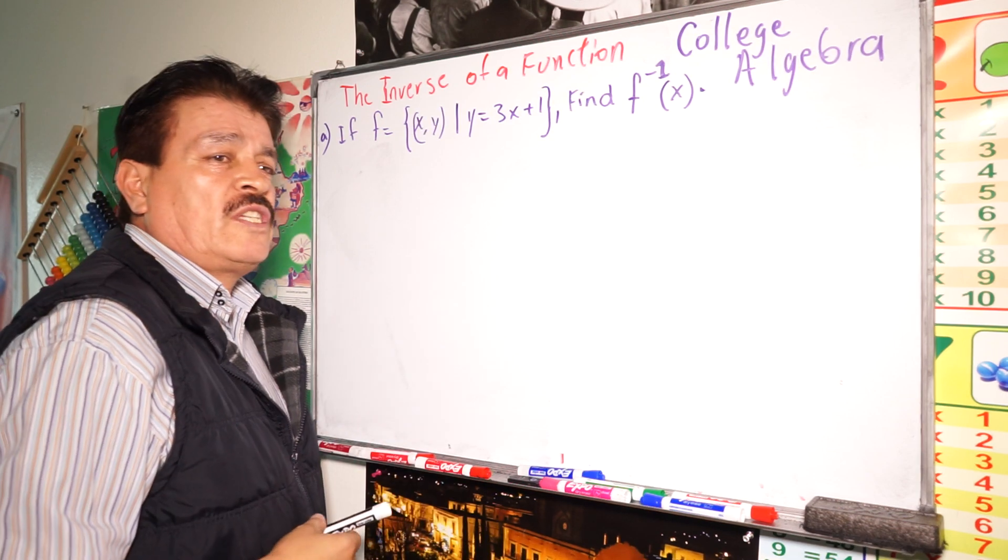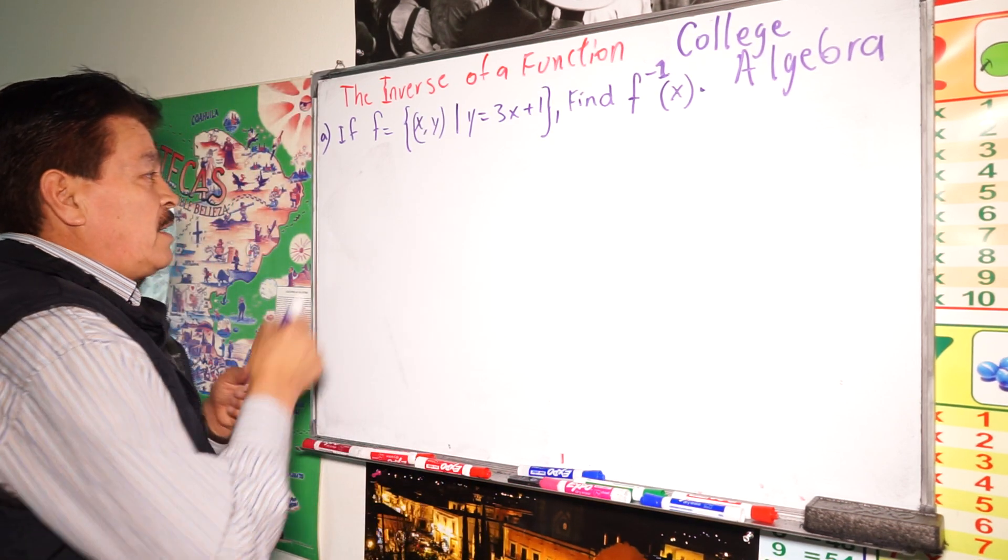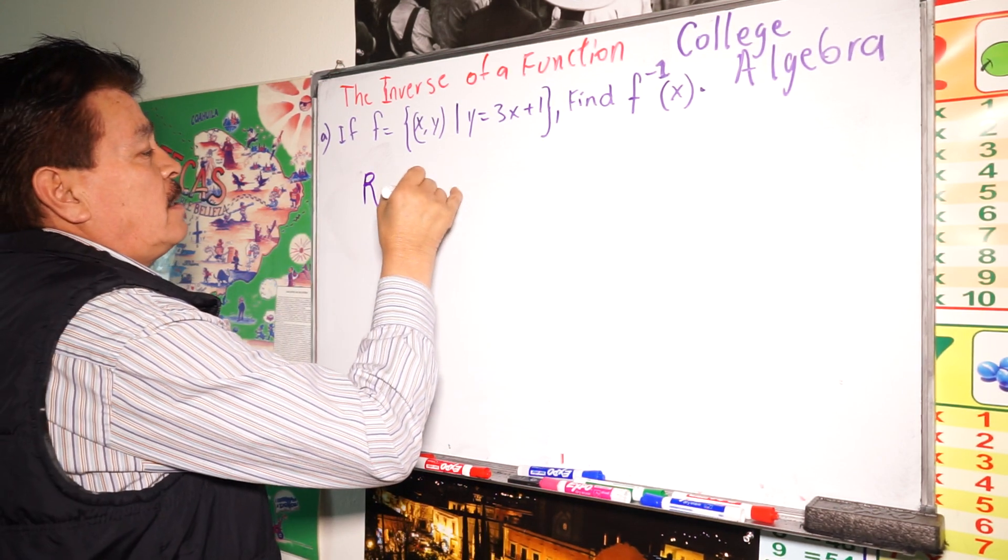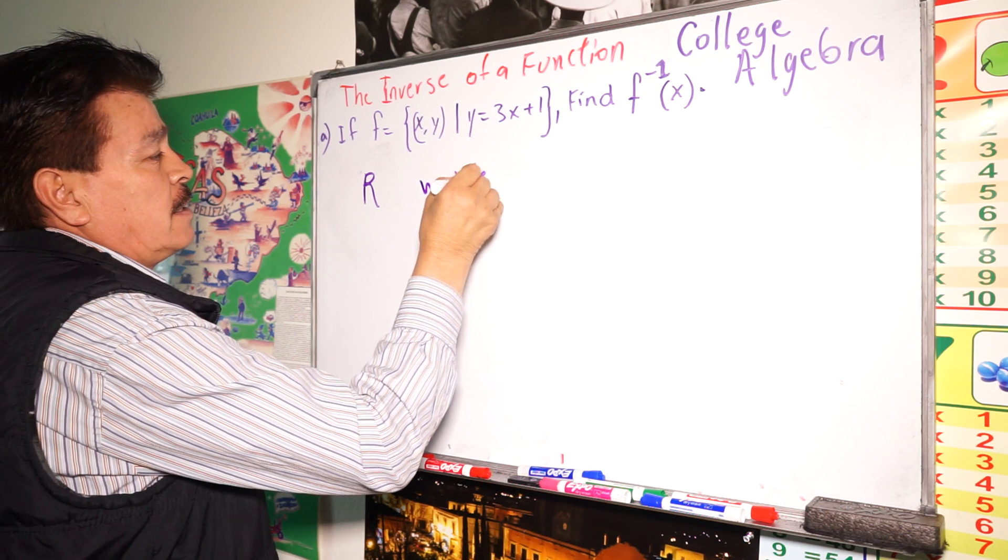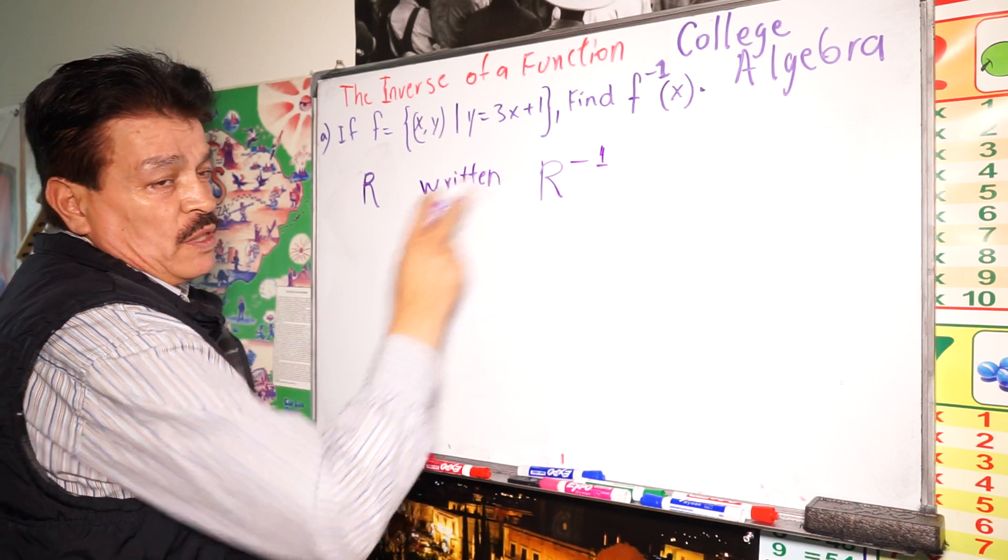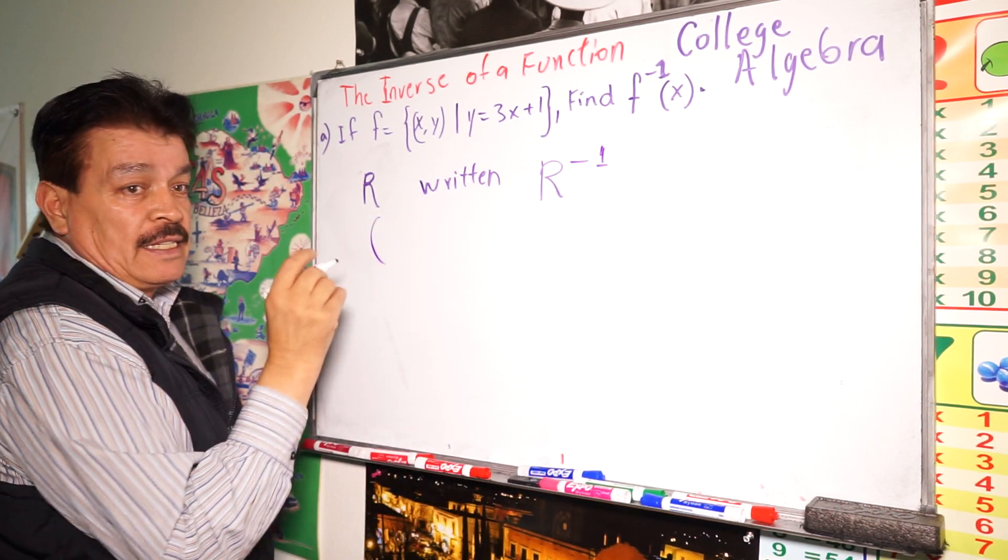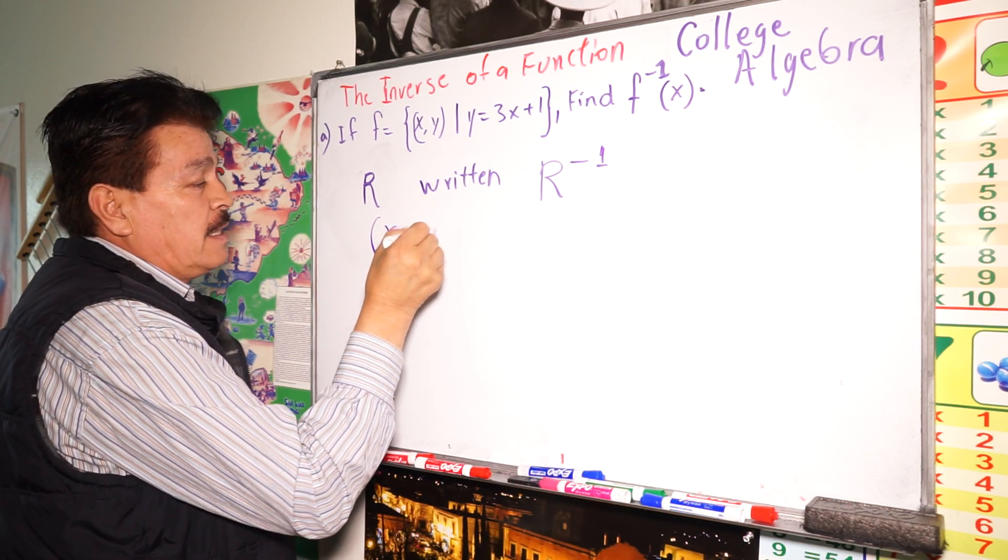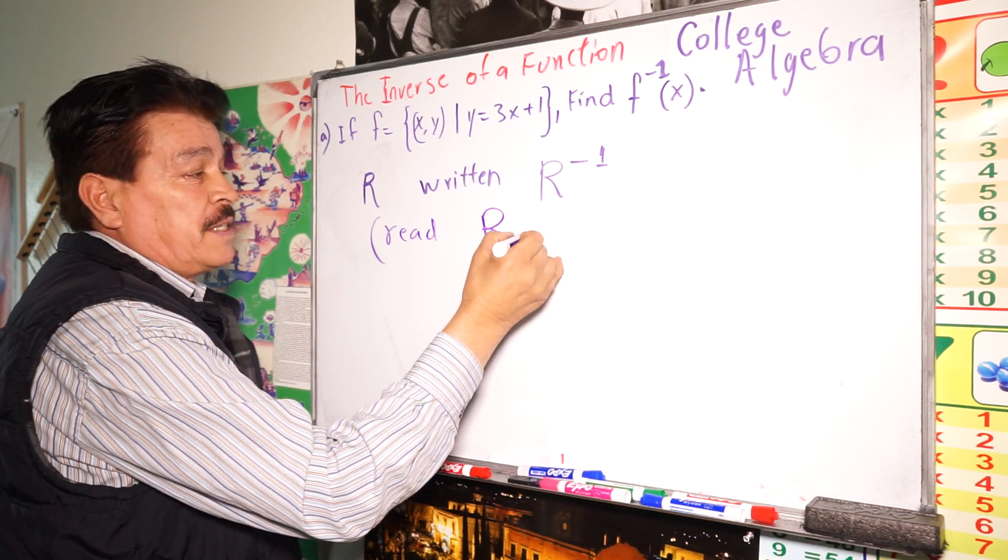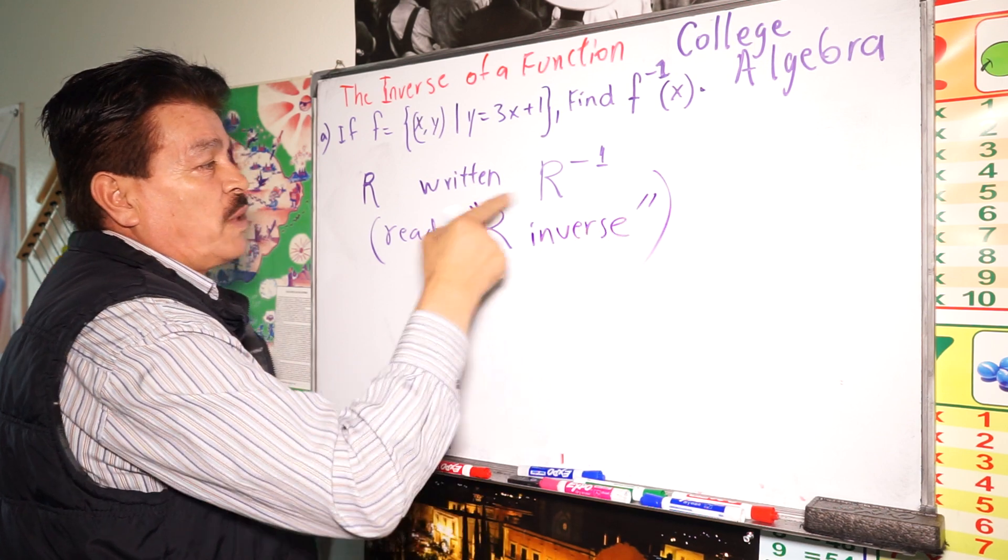Some concepts for review before. We defined the inverse of the relation R, written R to the negative 1. So, this reads R inverse, in R inverse, okay? This is the way to read.